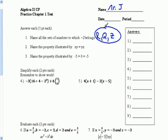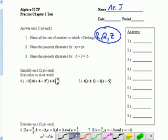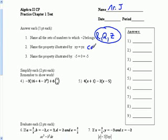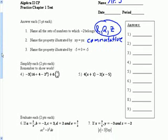For number two, it says name the property illustrated by xy equals yx. We're using multiplication here, and what happens is we took these and switched the order in which we did them. So when we take and switch the order like that, it means we're using our commutative property. So this is the commutative property of multiplication, but as long as you put commutative there, that's fine.